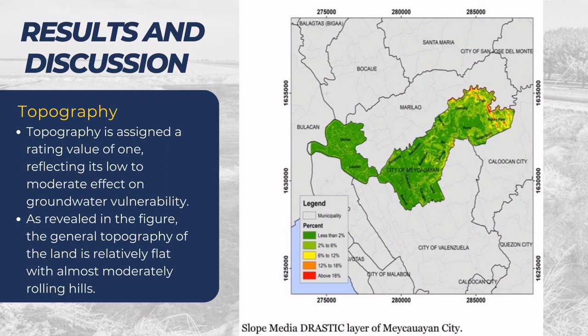For topography, it is assigned a rating value of 1, reflecting its low to moderate effect on groundwater vulnerability. As revealed in the figure, the general topography of the land is relatively flat with almost moderately rolling hills.